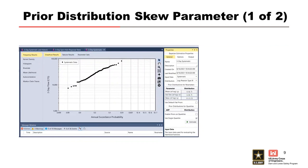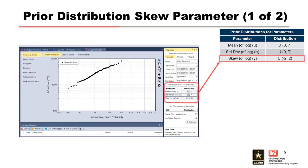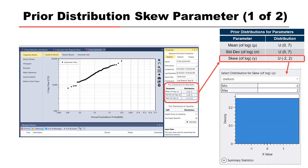When we have regional SKU information available, such as from a regional SKU study, we can apply what's called a prior distribution. The prior distribution allows us to account for the regional SKU information in our frequency analysis, providing information about the value of SKU at our site before analyzing the at-site data. When no regional SKU information is used, RMC Best Fit uses a default flat prior distribution for SKU — a uniform distribution U(-2, 2) — meaning the prior is uninformative and doesn't add to our knowledge about the data set.